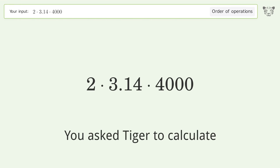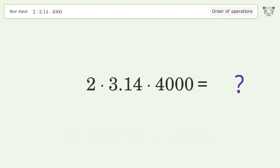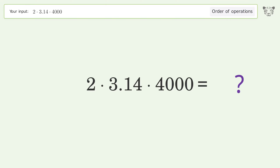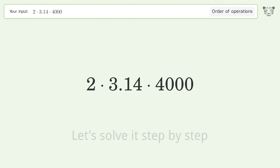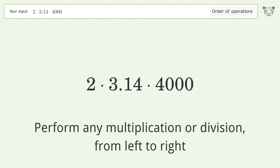You asked Tiger to calculate this. It deals with the order of operations. The final result is 25,120. Let's solve it step by step.